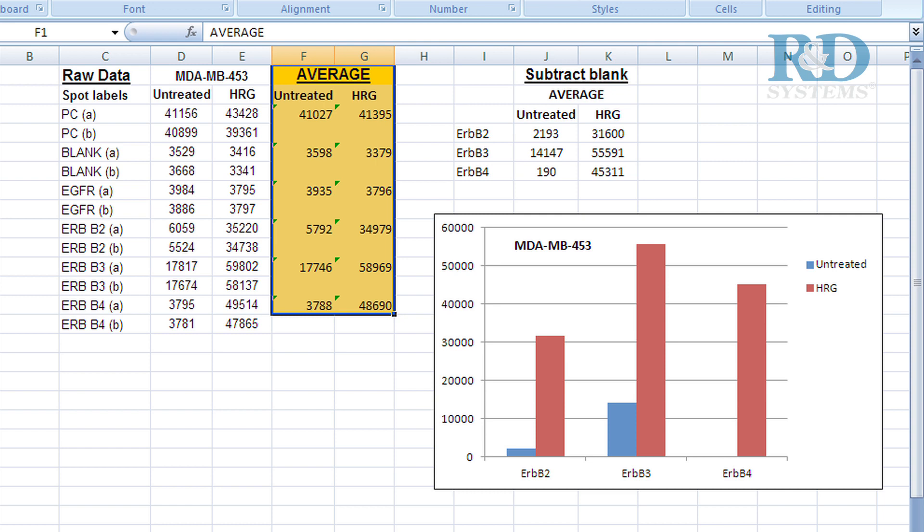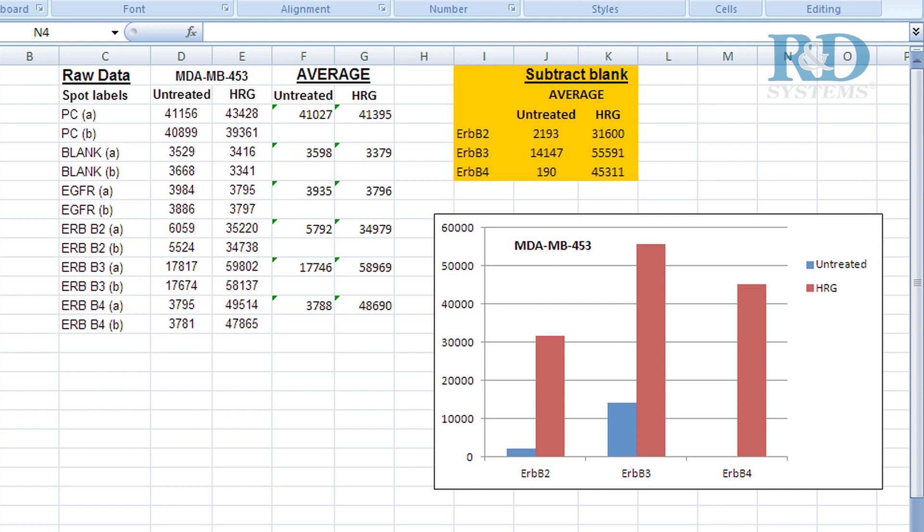Determine the average signal or pixel density of the pair of duplicate spots representing each receptor tyrosine kinase. Using a signal from a clear area of the array or negative control spots as a background value, subtract an averaged background signal from each spot.